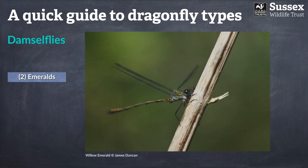The next damselfly group, in line with the dragonflies, are also known as the emeralds. Of course they're very different from the emerald dragonflies, but they do display a lovely metallic green coloration. We have just four species of emerald damselfly in the UK, but there's only really one species that is relatively common and widespread.